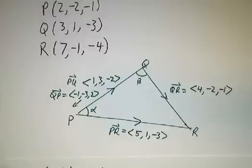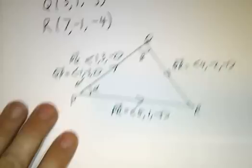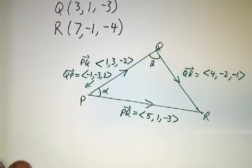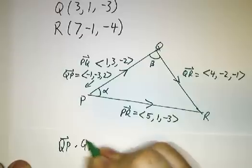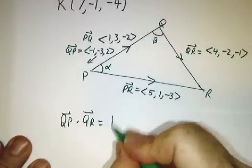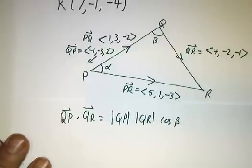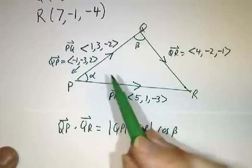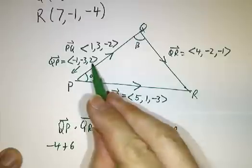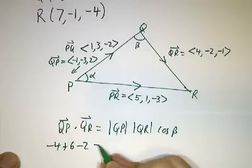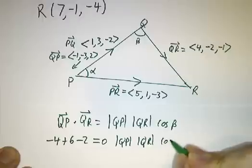So now we've got these two things, and we say, alright, we want to figure out the angle beta. So we need to take QP dotted into QR is the length of QP times the length of QR times the cosine of beta. But QP dot QR, that's negative 1 times 4, plus negative 3 times negative 2, plus 2 times negative 1, and that's 0.